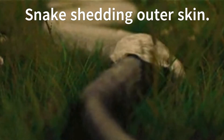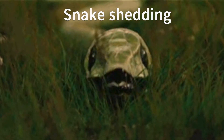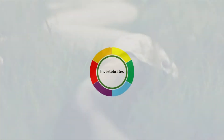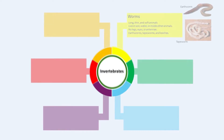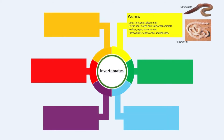Invertebrates come in a massive variety and they make up about 95% of all animal species on Earth. These invertebrate animals can be sorted into many different groups. Let's start with worms. Worms are long, thin and soft animals that live in soil, water or inside other animals. They have no legs, eyes or antennae. Some examples of worms are earthworms, tapeworms and leeches.